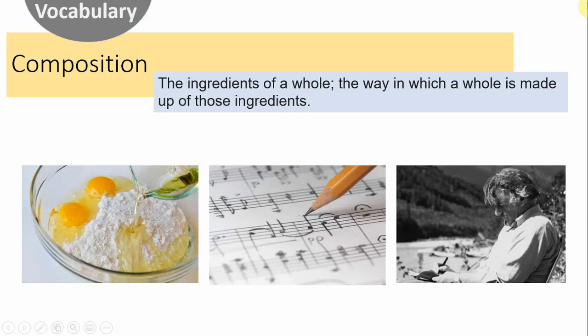Look, there's Ted Hughes composing a poem, writing down ideas in his notebook. When we talk about the composition of a poem, we're talking about the elements that go to make up that poem, the order in which they are placed, and the reasons why they are placed where they are.